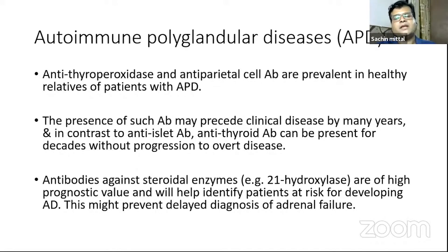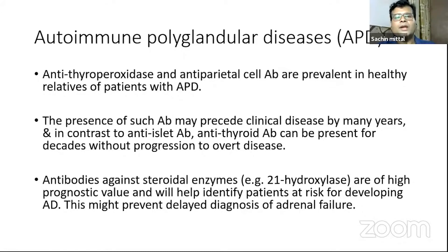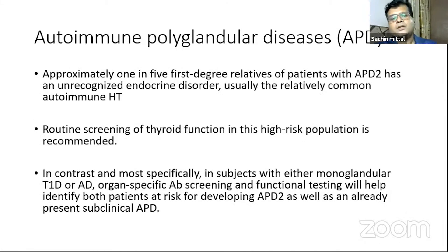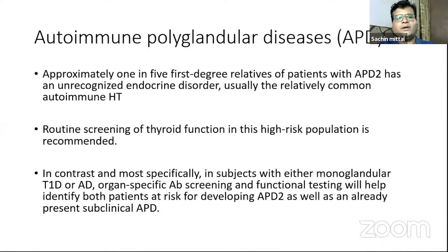When looking at antibodies against a steroidal enzyme like 21-hydroxylase or gonadal enzymes, these have a higher prognostic value and do help identify patients at higher risk of developing Addison's disease in the future. Nearly 20% of first-degree relatives of patients with polygenic inheritance of autoimmune polyglandular disease type 2 have an unrecognized endocrine disorder, which is why routine screening in them is recommended.